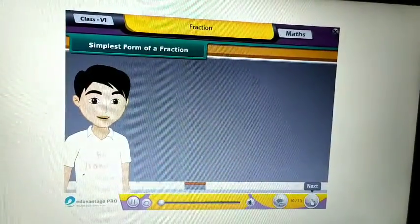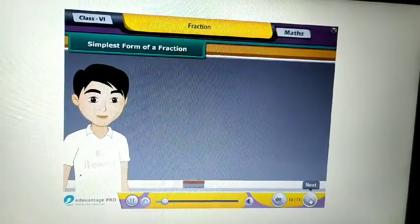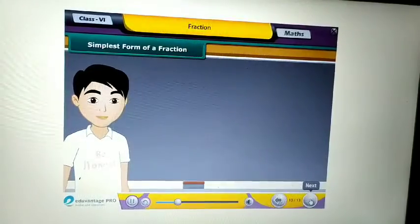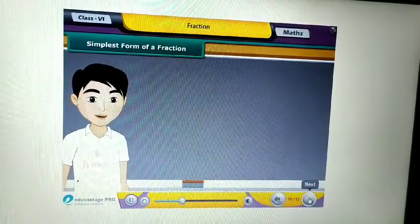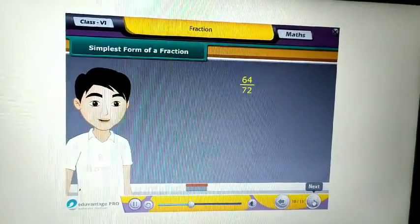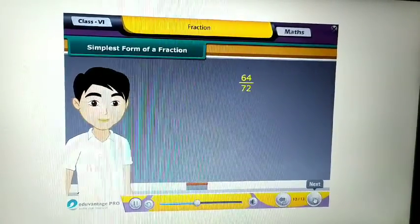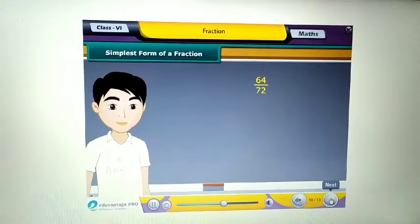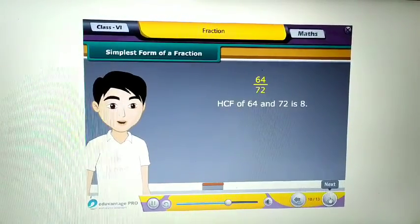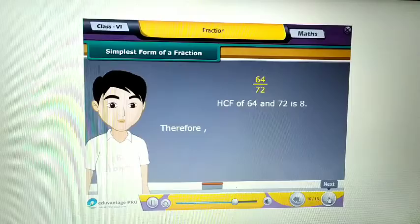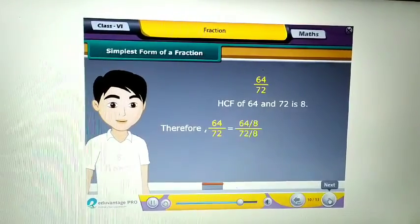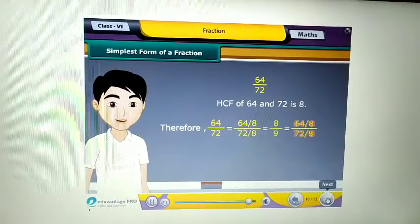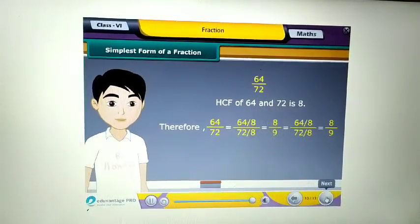Students, second method to find the equivalent fraction in the simplest form is to find the HCF of the numerator and denominator and then divide both of them by the HCF. Consider fractions 64 upon 72. The HCF of 64 and 72 is 8. We get new fraction 8 upon 9 on dividing the numerator and denominator both by HCF.